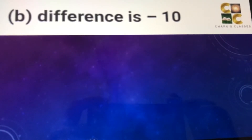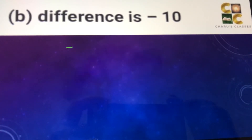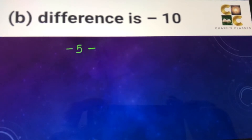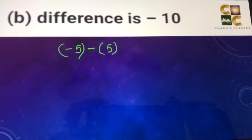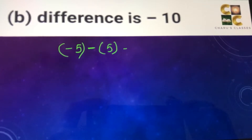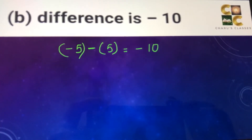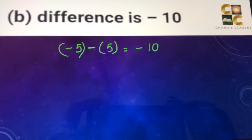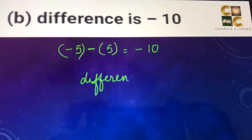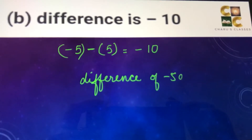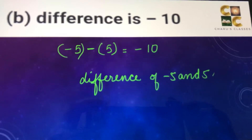Part B: difference is minus 10. We can take minus 5 and minus 5. Two negative numbers get added up with the negative sign, so minus 5 minus 5 gives minus 10. So the difference of minus 5 and 5 gives minus 10.